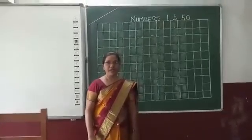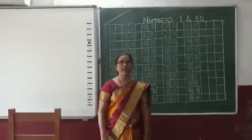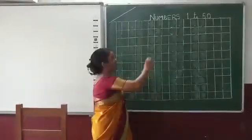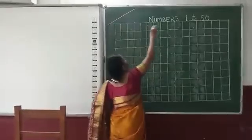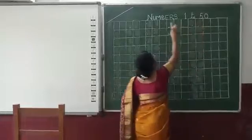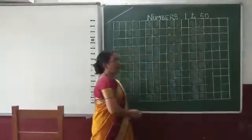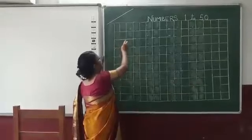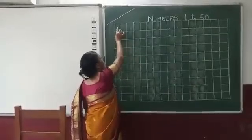Take out your maths copy, square copy and start writing. Children, write first, numbers 1 to 50 right on the top. And you will start writing 1 to 50 inside the box.